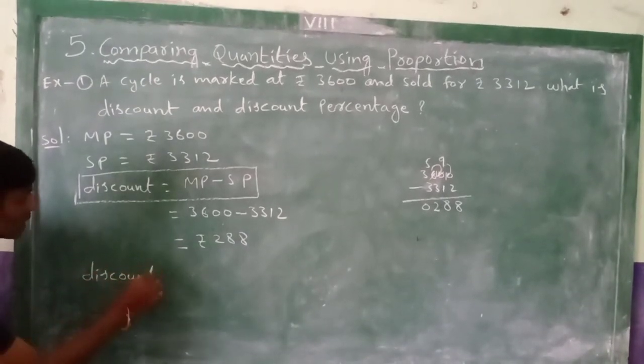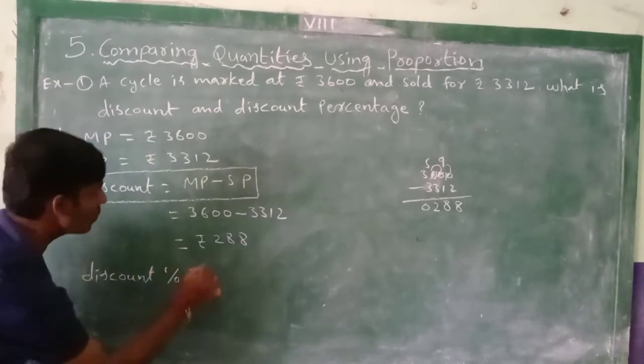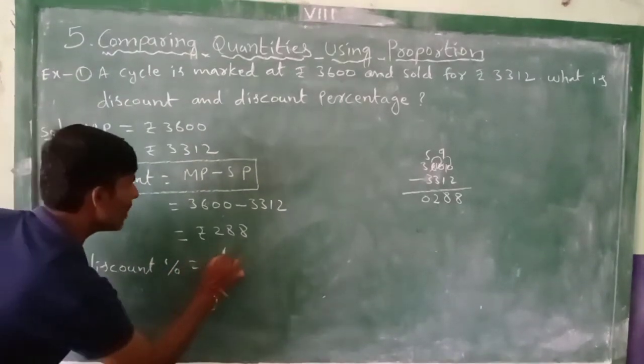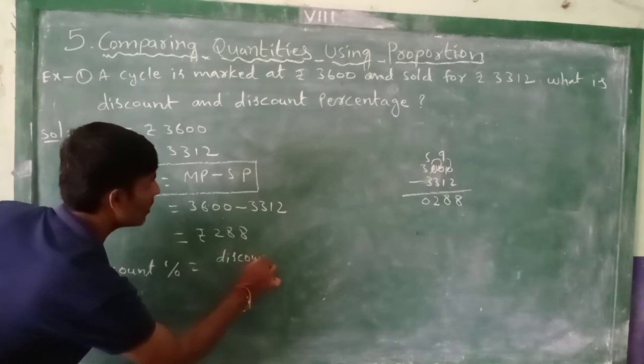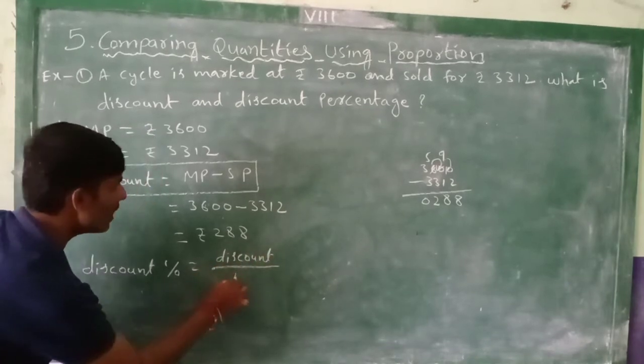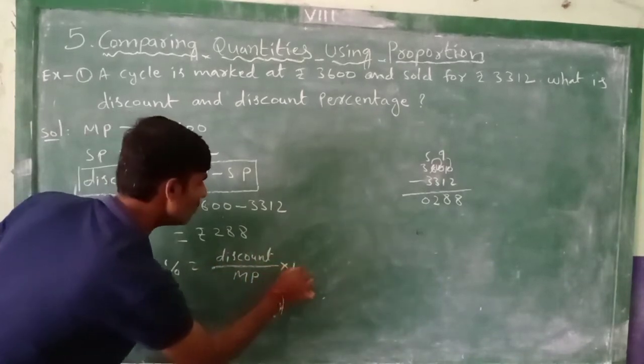Now we have to find the discount percentage. Discount percentage equal to discount divided by marked price into 100.